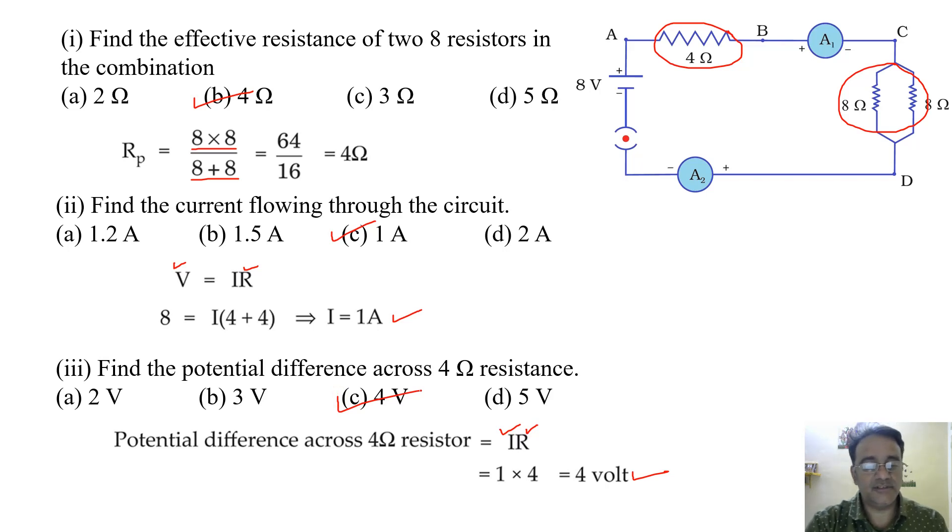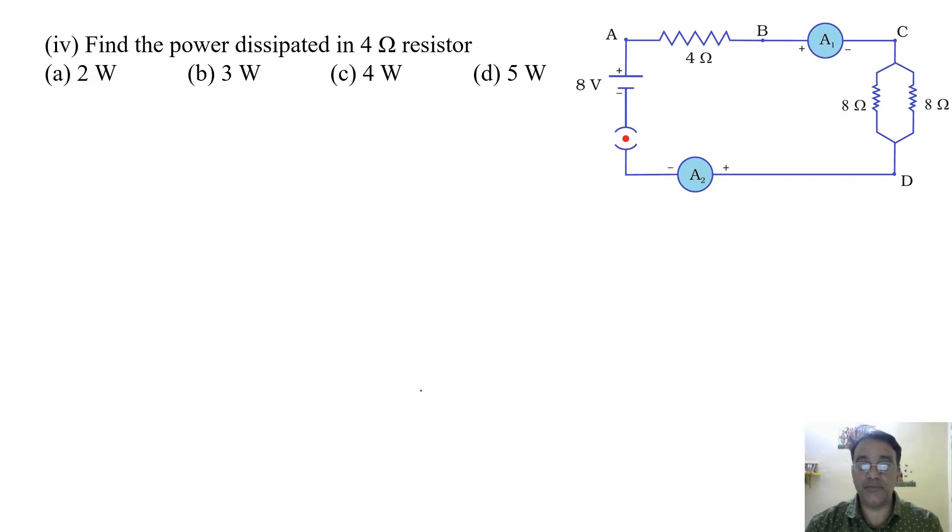Now we will move towards the next question. Find the power dissipated in 4 ohm resistor. The formula of power is I square R. I we have 1 ampere and R is 4. So 1 square into 4. That equals 4 watt. So the correct option is C.